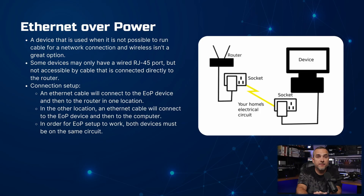On the flip side of Power over Ethernet is Ethernet over Power, used in situations where running a network cable or using wireless connectivity is not possible. It is handy when devices only have a wired RJ45 port but are not easily reachable by a cable from the router. For an Ethernet over Power setup to function properly, both devices must be on the same circuit.